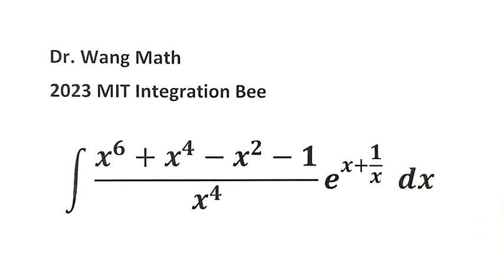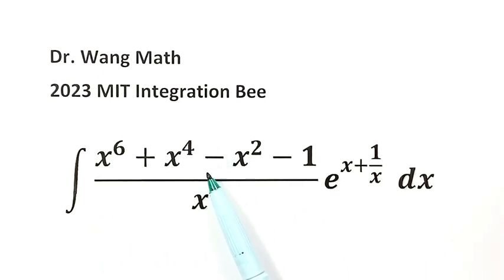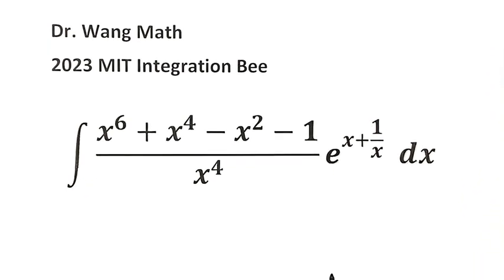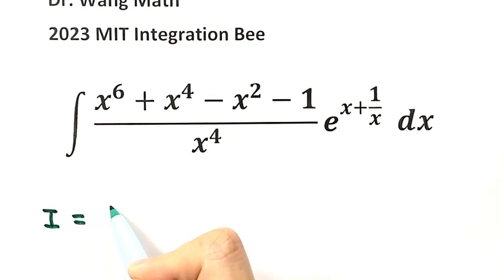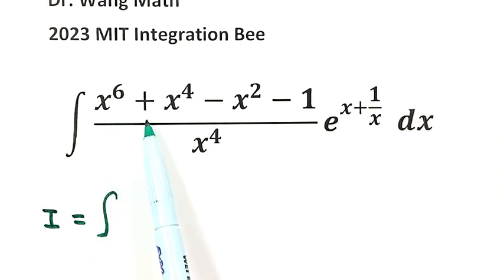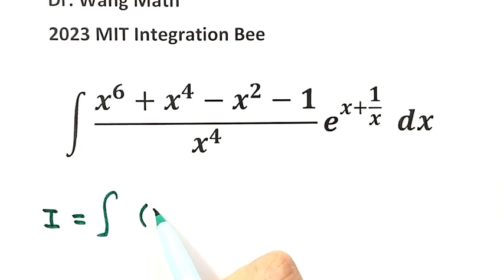How to solve it? The first step, we're going to separate this expression into two parts. We're going to separate from here. I'm going to use i for this integral. So i equals the integral of the first part: x to the power 6 plus x to the power 4, divided by x to the power 4. Then simplify — that's just x squared plus 1.